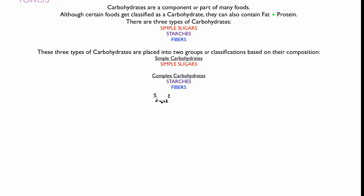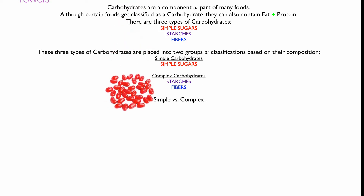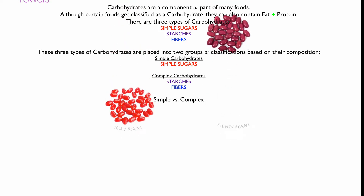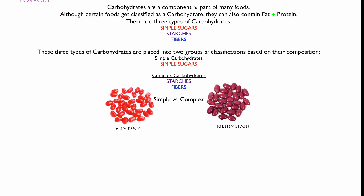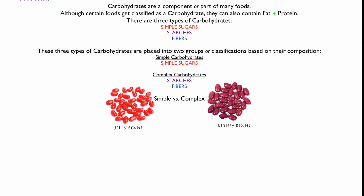So it's a matter of simple versus complex. And it really is when you look at these two things — jelly beans and kidney beans — and consider that they are both classified as carbohydrates. That's probably why carbohydrates are such a confusing category.